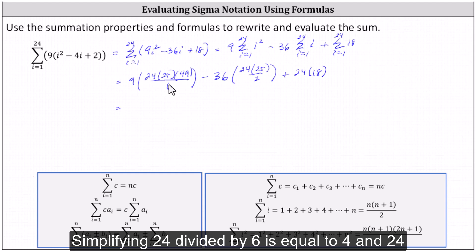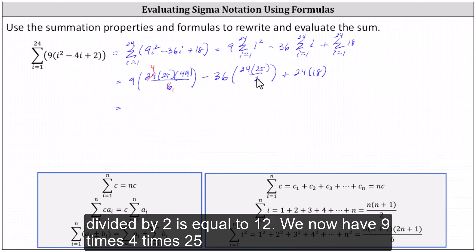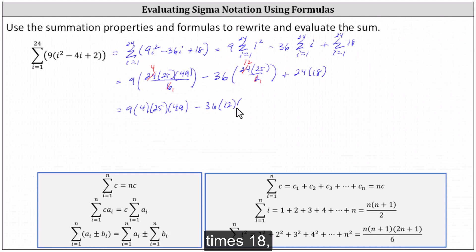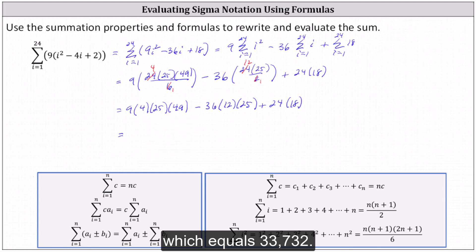Simplifying: 24 divided by 6 is equal to 4, and 24 divided by 2 is equal to 12. We now have 9 times 4 times 25 times 49 minus 36 times 12 times 25 plus 24 times 18, which equals 33,732.